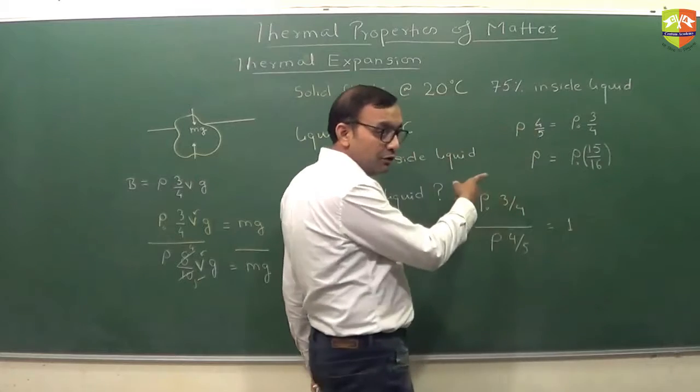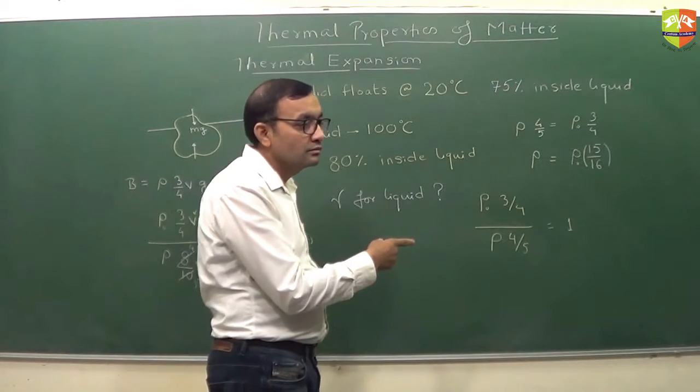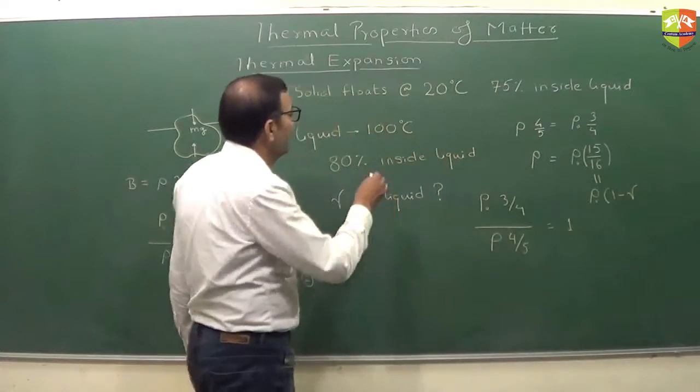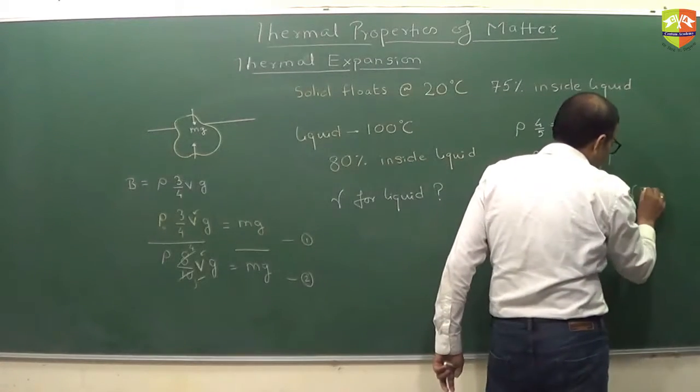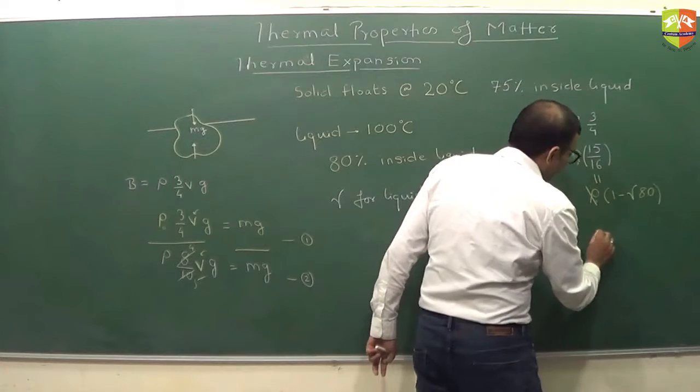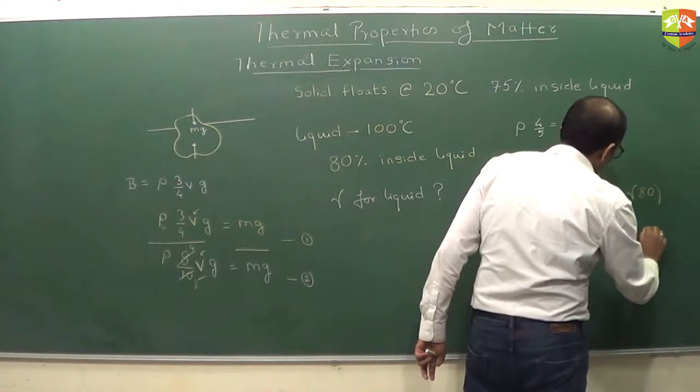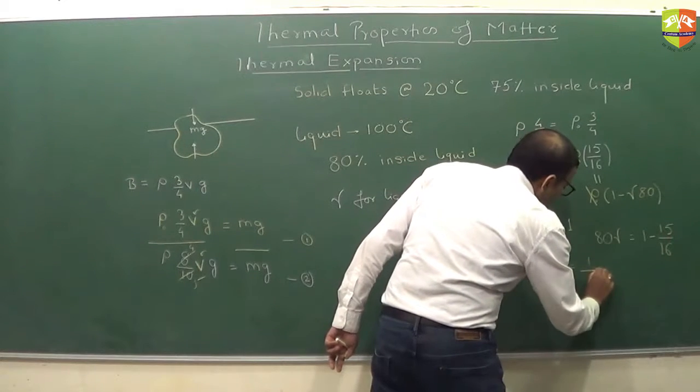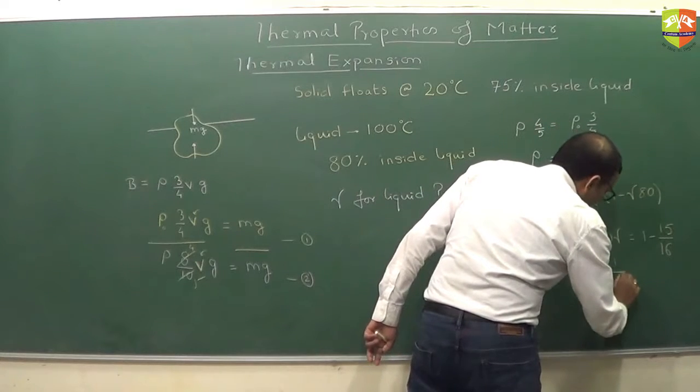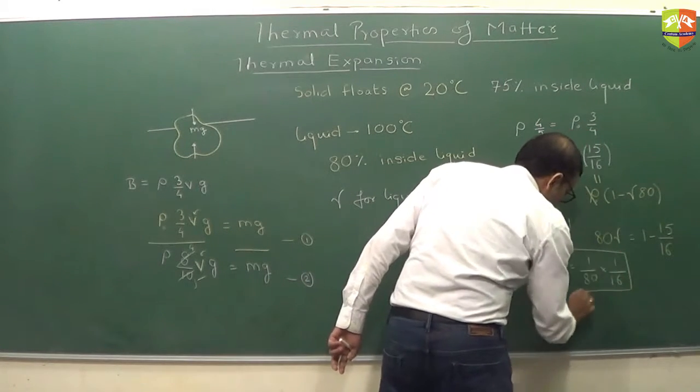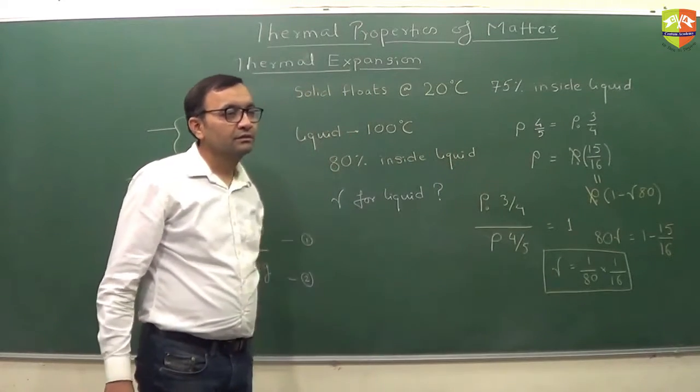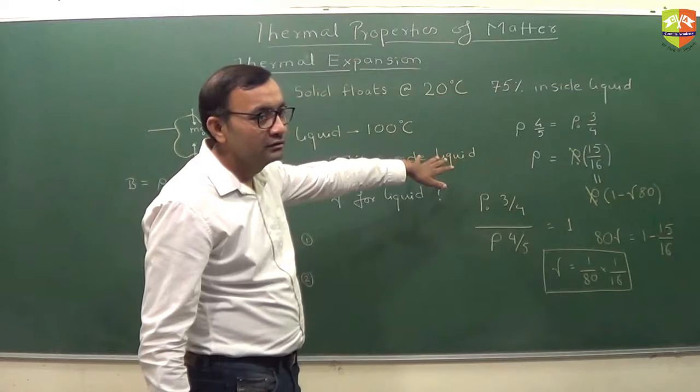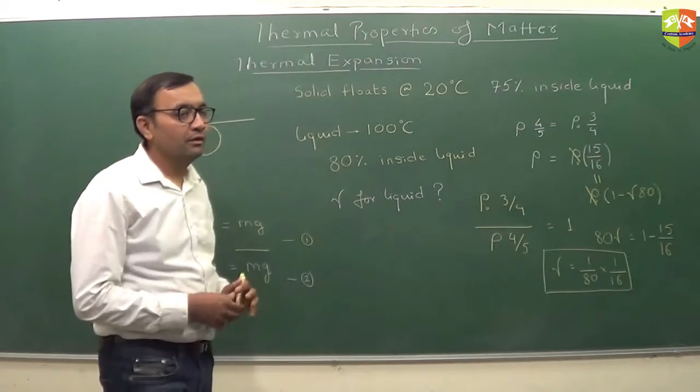How will you get gamma from here? This should be equal to rho0 times 1 minus gamma delta t. What is delta t? 80. 100 minus 20, right? This is 80. rho0 and rho0 get cancelled. So 80 times gamma is equal to 1 minus 15 by 16. Gamma is 1 by 80 times 1 by 16. Did you follow this concept? This is how you have to look at this particular question.